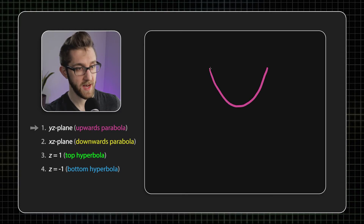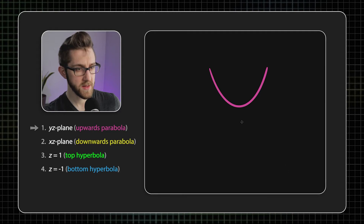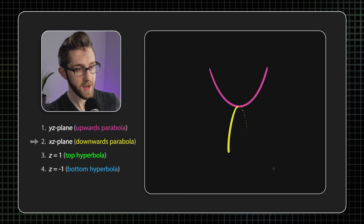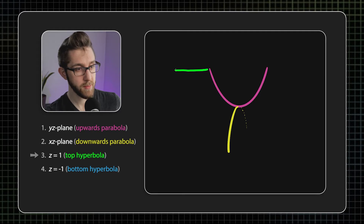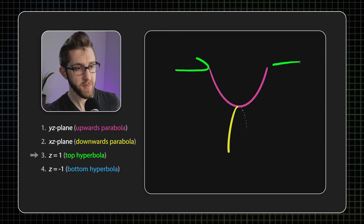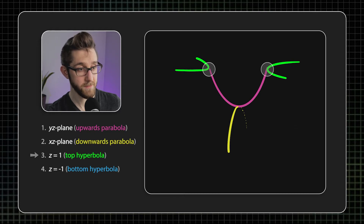I'm going to start by drawing that upwards parabola, and then I'm going to draw the downwards parabola. Half of this curve is going to be behind the surface in the end, so I'm drawing that part with a dotted line. Next, the upper hyperbola in green. This one's kind of tough because of the perspective, but it doesn't have to be perfect — do make sure that the curvy part of each hyperbola touches the ends of your upwards parabola.